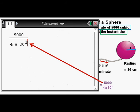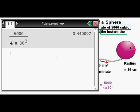And here we have 5,000 over 4 π 30 squared in the calculator. Press enter. We get 0.442097, which we circle here.